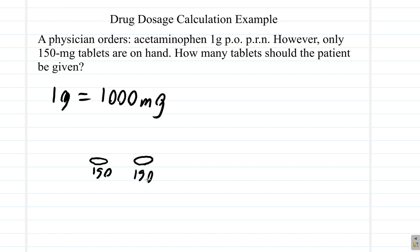Two tablets, 150 plus 150 mg would be 300 mg. Still not enough. Instead of keeping that going, we have a division to do. 1000 divided by 150.